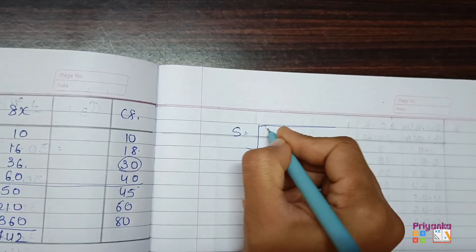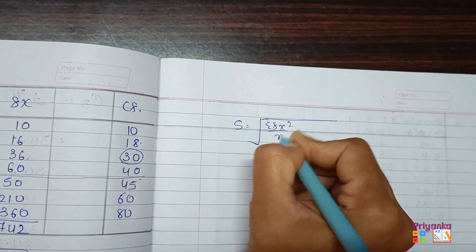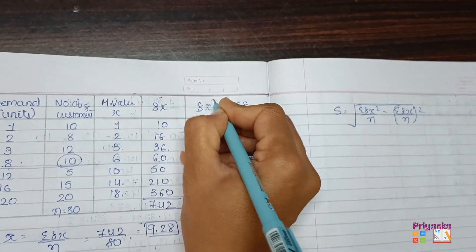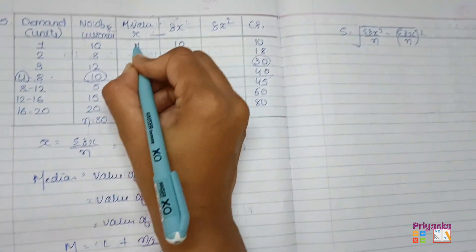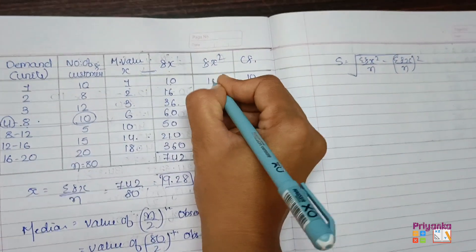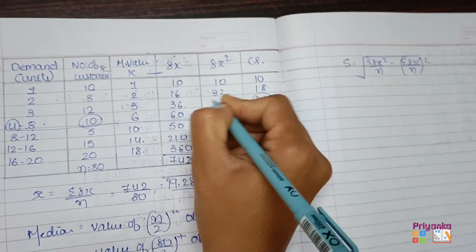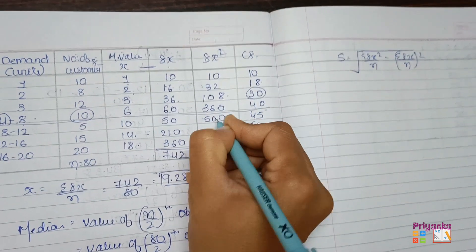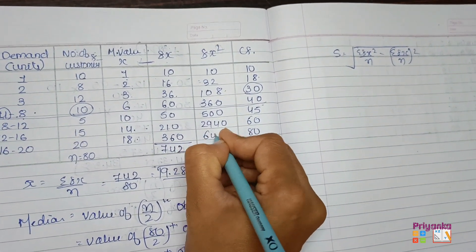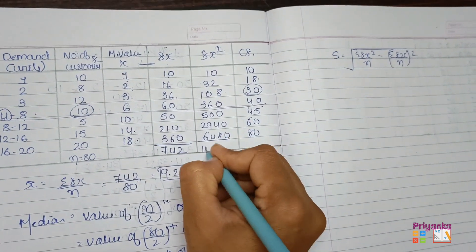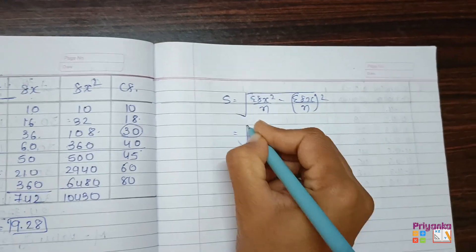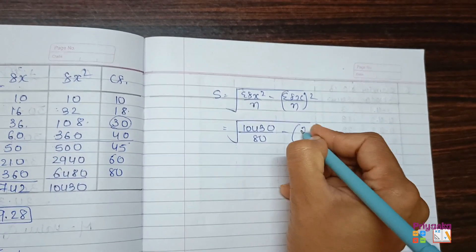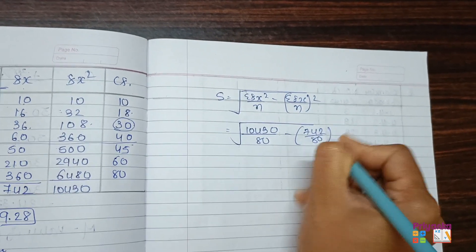Now we need to find out standard deviation, that is sigma FX square upon n minus sigma FX upon n whole square. So here we need FX square column which is multiply FX with X column. 10 ones are 10, 16 twos are 32, and continue with the remaining. The total of this column is 10430.